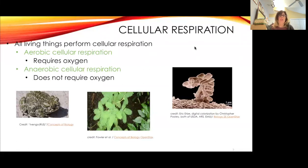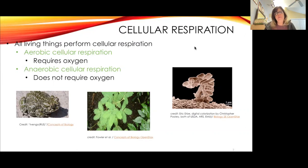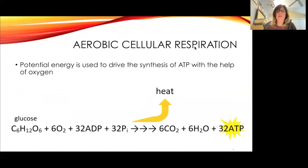All living things perform cellular respiration. Aerobic cellular respiration requires oxygen. Aerobic means with oxygen and anaerobic means without. We have some organisms here — a frog, a mimosa plant, and some bacteria — that basically need to be able to make energy. Aerobic cellular respiration takes potential energy and uses it to drive the synthesis of ATP with the help of oxygen.